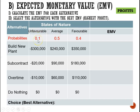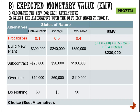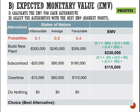In calculating the EMV for building a new plant, we take 0.1 × (−300,000) + 0.5 × 240,000 + 0.4 × 350,000, which gives an expected profit of $230,000. For subcontract, we take 0.1 × (−20,000) + 0.5 × 90,000 + 0.4 × 180,000, which gives an expected profit of $115,000.